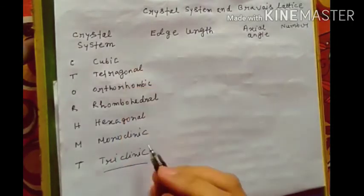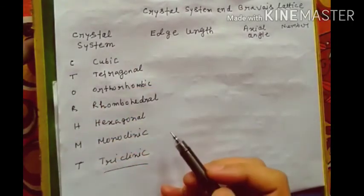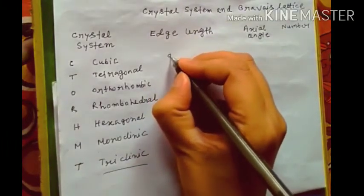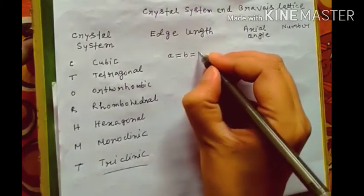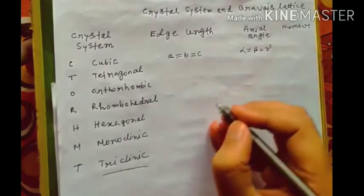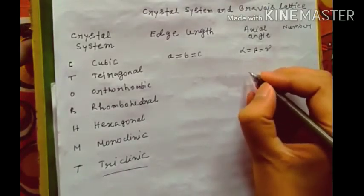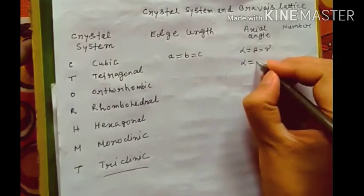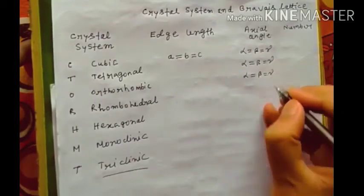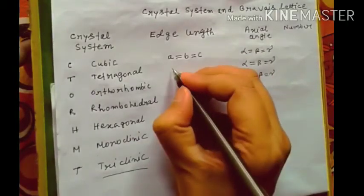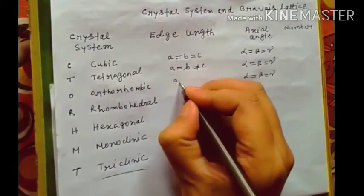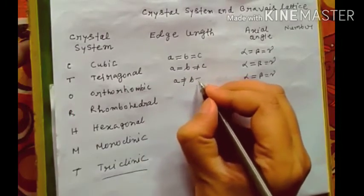So there are 7 crystal systems C to HMT. Now edge length for cubic system: a equal to b equal to c, alpha equal to beta equal to gamma. Repeat these three, same: alpha equal to beta equal to gamma. Here, a equal to b not equal to c. A not equal to b not equal to c.